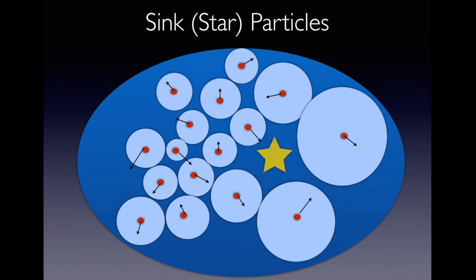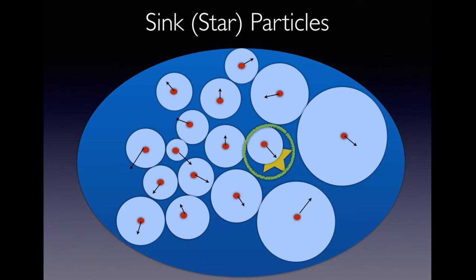And they are called sinks because they have the ability to accrete more gas particles. Like this one is being trapped by the gravity of the star, and then it's just being eaten up by the sink, and the sink increases its mass. This allows us to do incredible things in simulations.